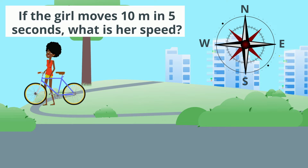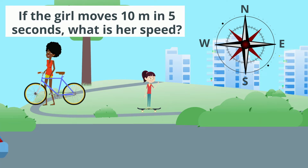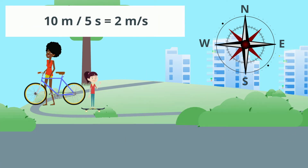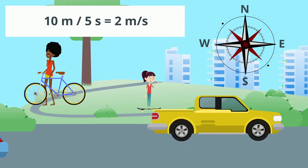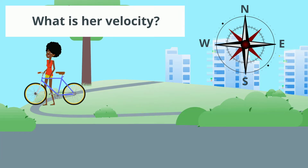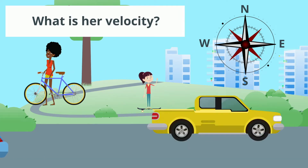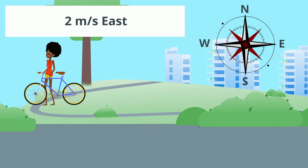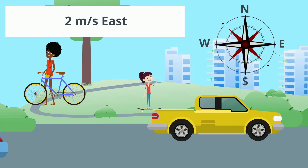If the girl moves at 10 meters per second in 5 seconds, what's her speed? 10 meters divided by 5 seconds equals 2 meters per second. What's her velocity? 2 meters per second east.